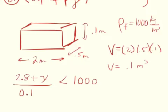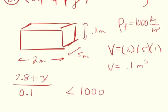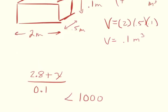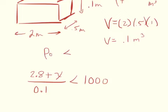Density is mass over volume. The mass of the object initially is 2.8 kilograms, but we're going to be adding some additional mass to it — like a person laying on top of the mattress or a brick it's carrying. We need the density of the object to be less than 1,000 so it will float.